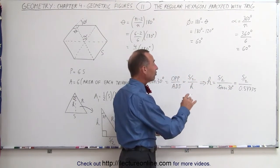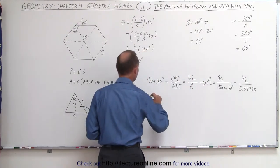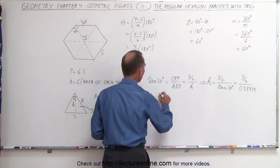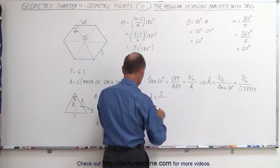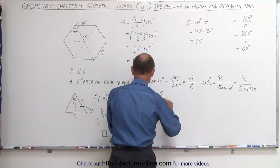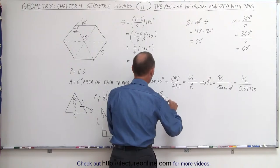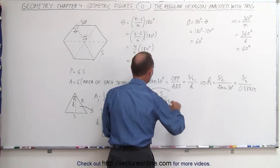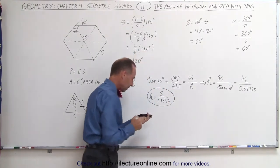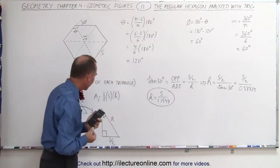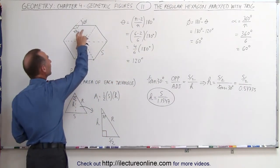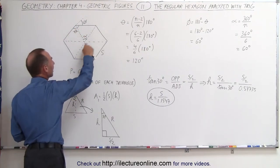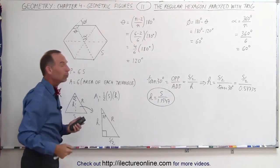Solving for H in terms of S, we can say that H is equal to S divided by 1.1547. That's the relationship between H and S in a triangle derived from taking a regular hexagon and dividing it into six equal triangles.